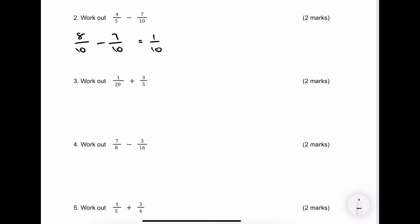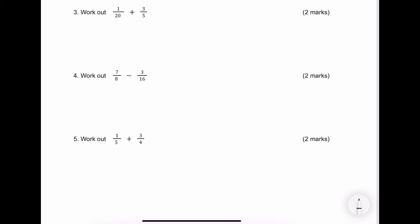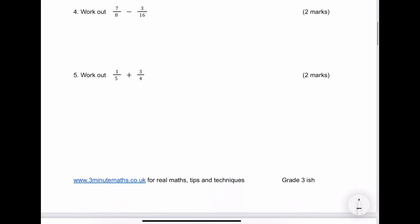Let's have a look at question number 3. Again I've got to choose the same denominator — it's going to be 20. So 1 over 20 I'm perfectly fine with. This is going to be 20 now, so 5 times 4 is 20, so I multiply the top by 4 as well, so that becomes 12. Adding those two together I'm going to get 13 over 20. Please do stop the video and have a go at the questions yourself.